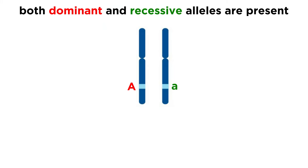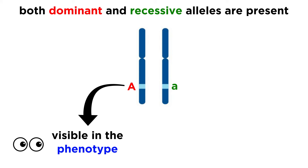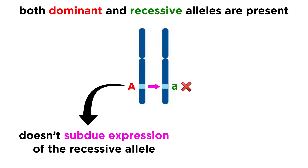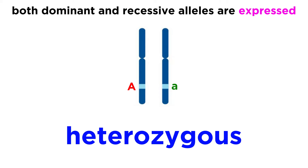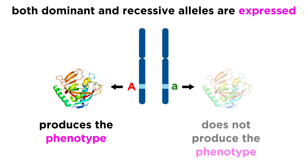First, it is important to understand that in cases of dominant and recessive alleles, one allele is dominant simply because it is visible in the phenotype, and not because it somehow subdues expression of the recessive allele. With heterozygous individuals, both the dominant and recessive alleles are expressed; it is simply that the product of the expression of the dominant allele produces the relevant phenotype.